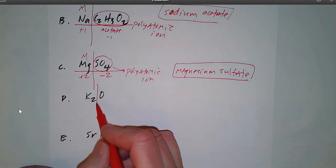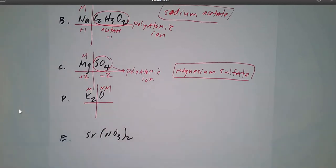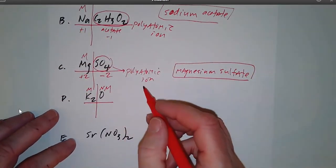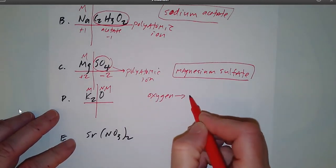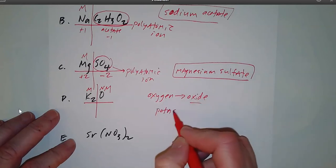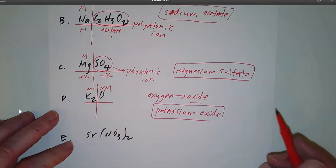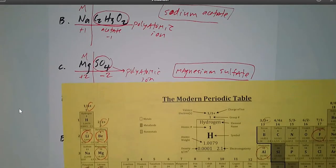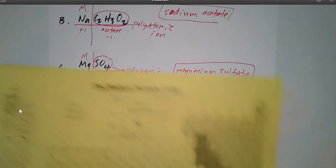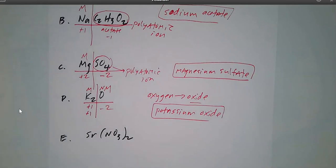Next: K₂O. Potassium is my metal and oxygen is my non-metal, so this is the simple kind — a simple binary ionic compound. K is potassium and O is oxygen. The name of oxygen gets changed to oxide — that's one of those weird exceptions; we don't call it oxygenide. The name is potassium oxide. We don't mention the subscript two in the name. Potassium has a plus one charge with two of them, and oxygen has a minus two charge.